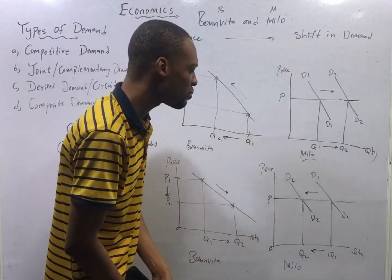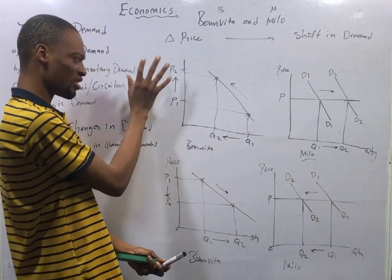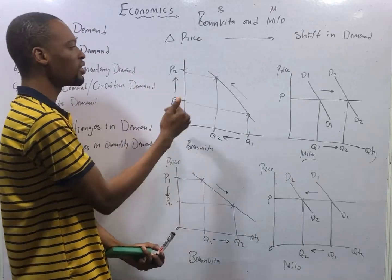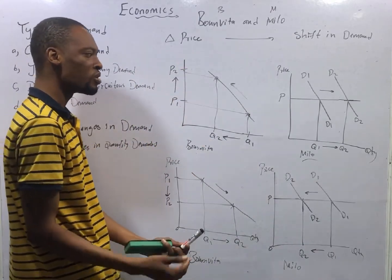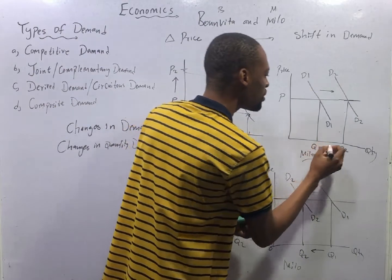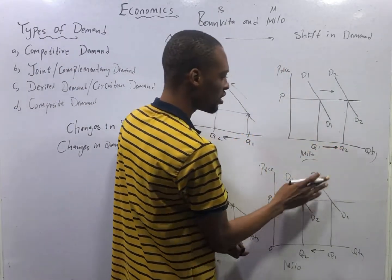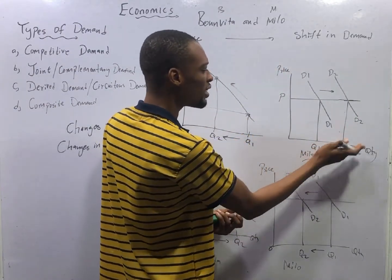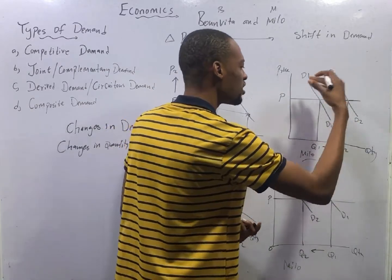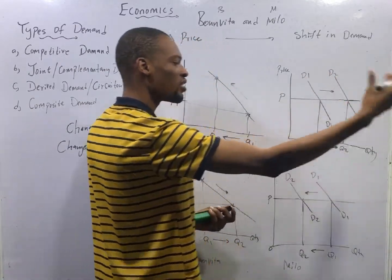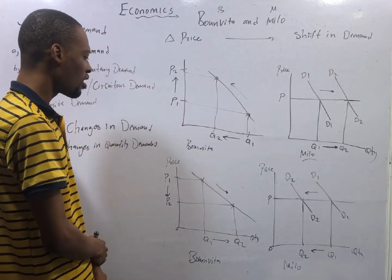This shift in demand is favorable because since the price of Bonvita has increased, people will shift to Milo. So Milo will get a positive shift in demand — an increase in demand — and demand shifts to the right or outward to show increase.